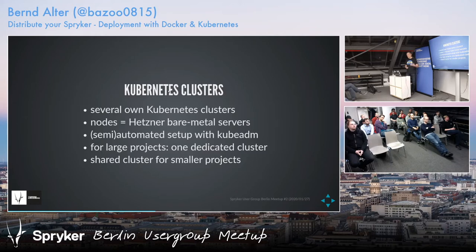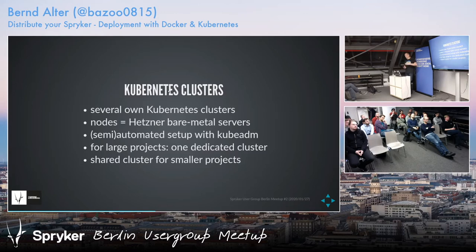In Kubernetes it's quite some effort to set up different users with different access to different namespaces, so it's easier to just have one Kubernetes cluster and give people access to it. For some smaller internal projects, we use one shared cluster — maybe six, seven, or eight projects on one four or six node cluster.